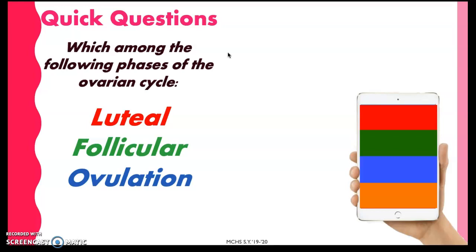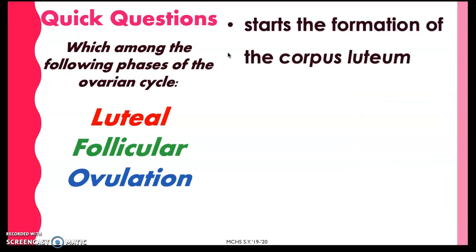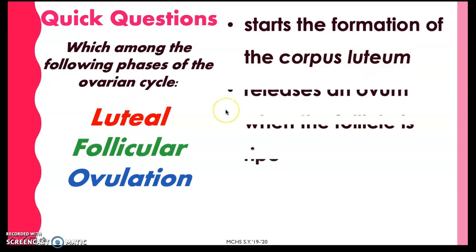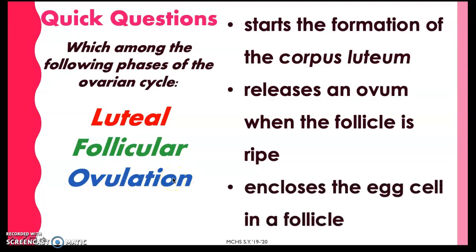Some quick questions: Which phase of the ovarian cycle starts the formation of the corpus luteum? Remember — luteum, luteal. Which phase releases an ovum when the follicle is ripe? That is the transition between follicular and luteal, which is ovulation. And lastly, which phase encloses the egg cell in a follicle? The follicular phase.